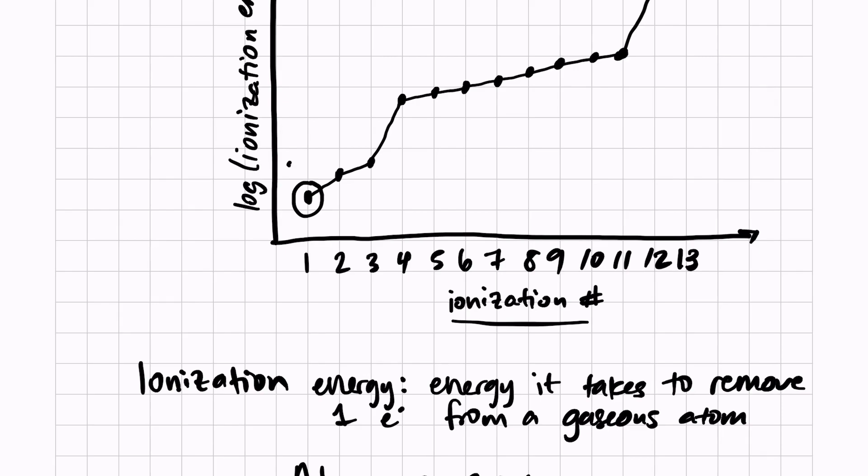Here's our 3p sublevel. Notice 3s takes a little bit more energy to remove, and that also makes sense logically, because as we move down the energy levels we should be getting closer to the nucleus. So 3s—and notice there's quite a large gap here. That means that we have now removed all of our valence electrons. Anything after this point will take a significant amount of energy to remove.